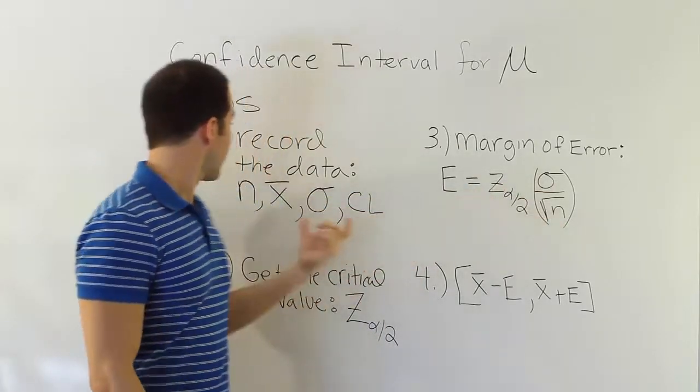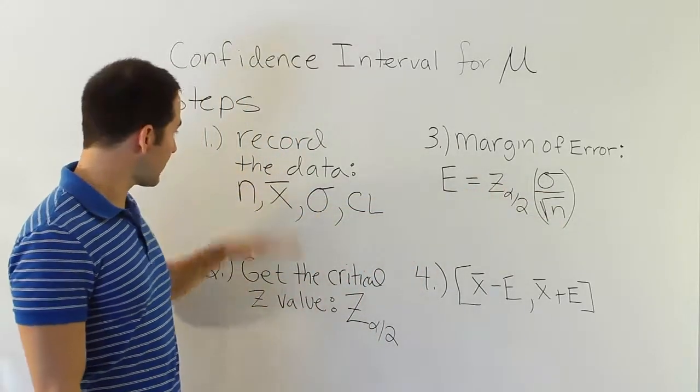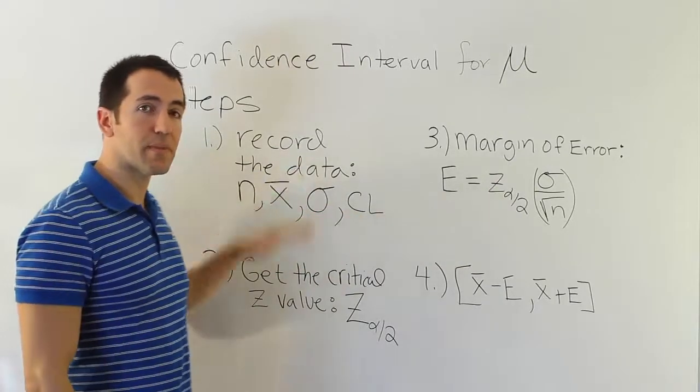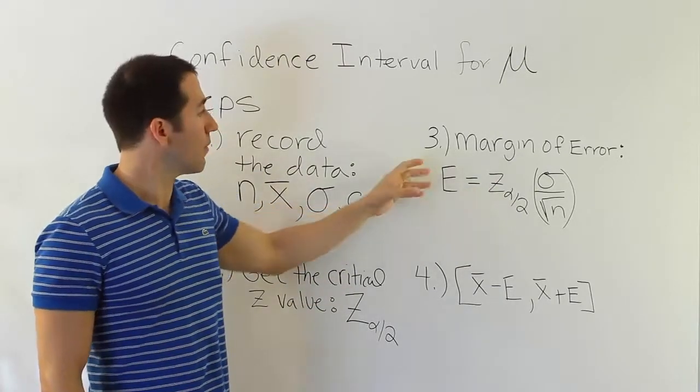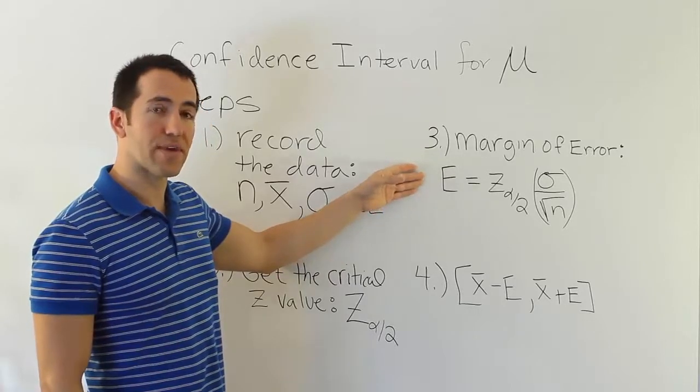σ and n are found in step 1. So basically, by this time, when you get to step 3, you have all the information you need. You can just plug it in here and do the calculation. Once you calculate the margin of error, you're going to have that value.